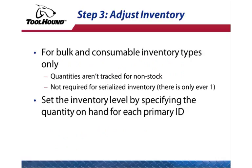Step 3: adjust inventory. For bulk and consumable inventory, you need to specify the quantity using an inventory adjustment. Remember that non-stock inventory doesn't carry quantities, and serialized inventory always has a quantity on hand of either 1 or 0.